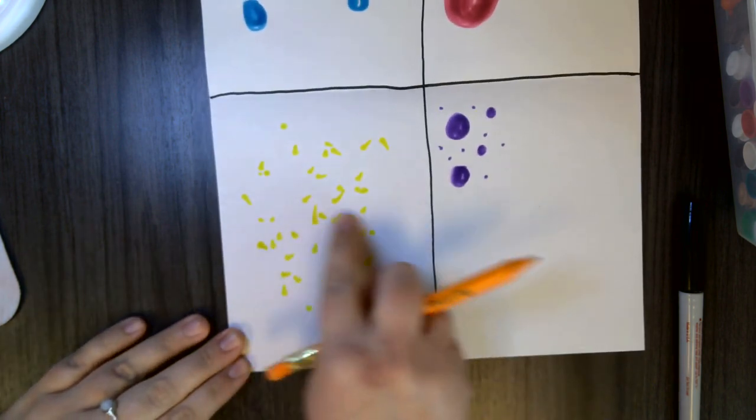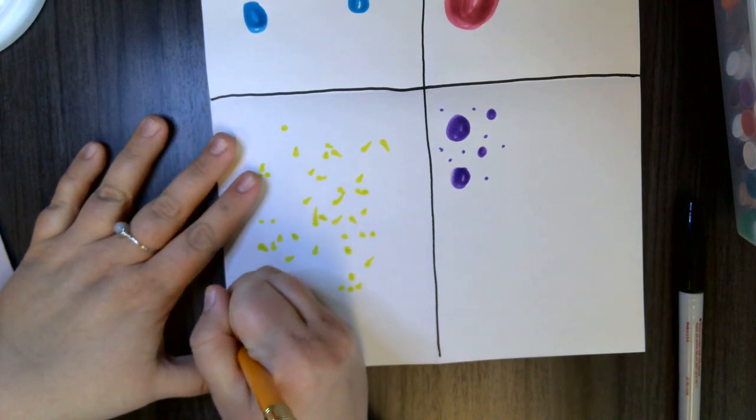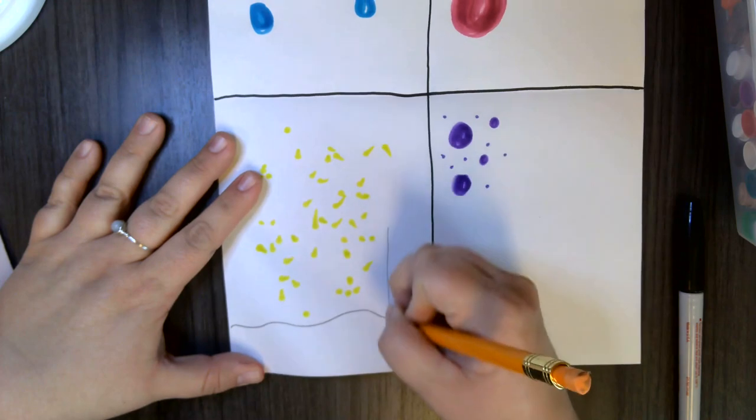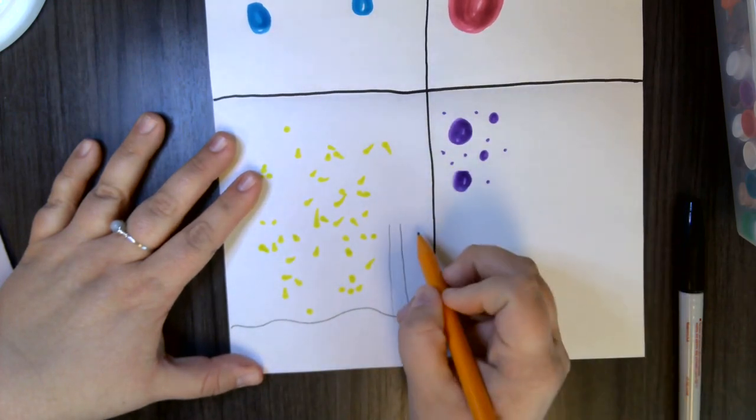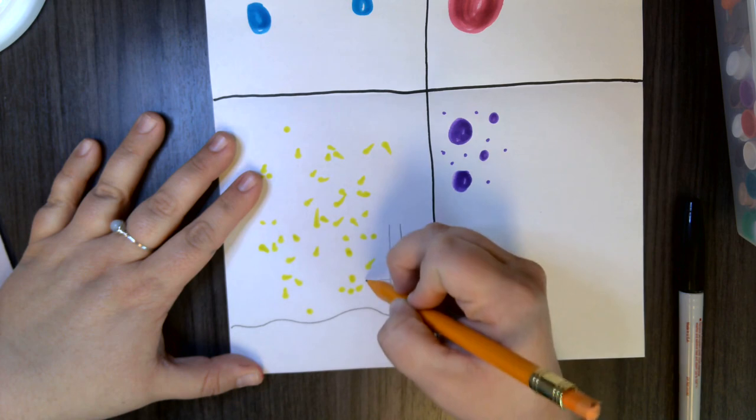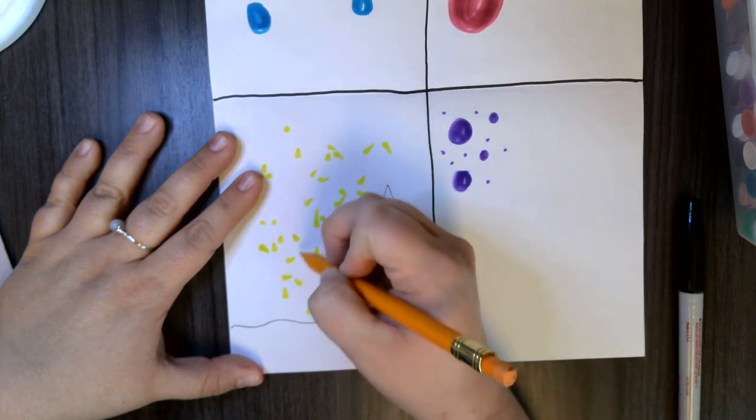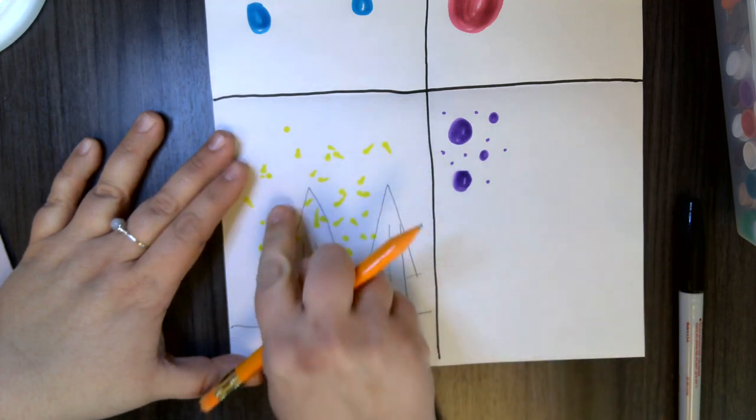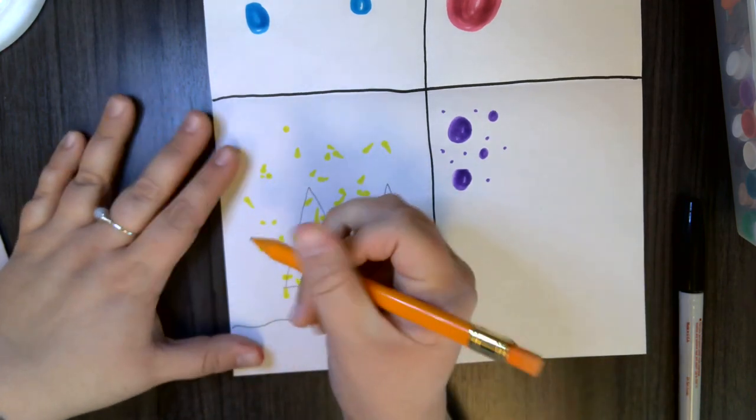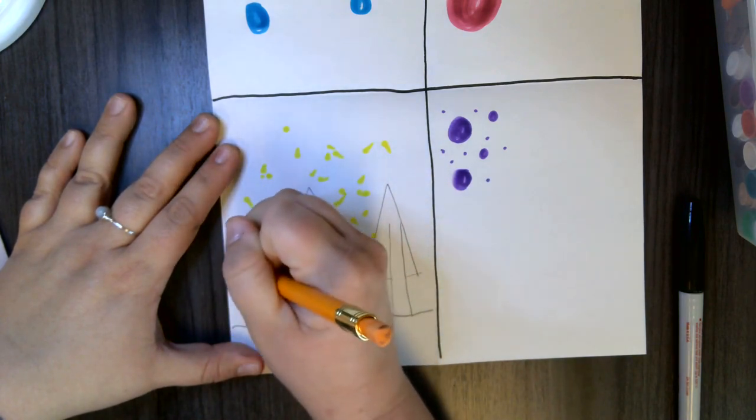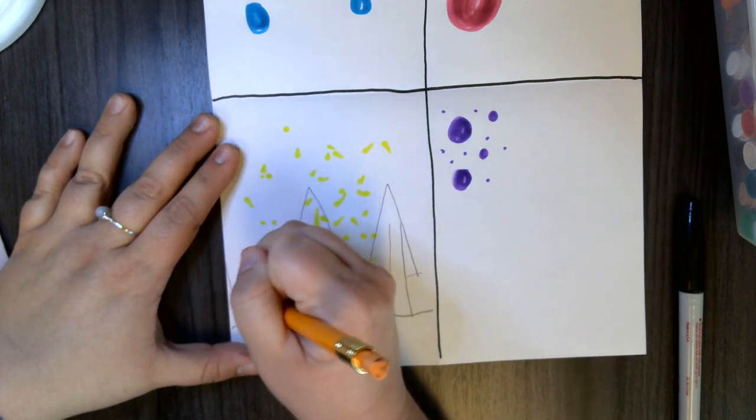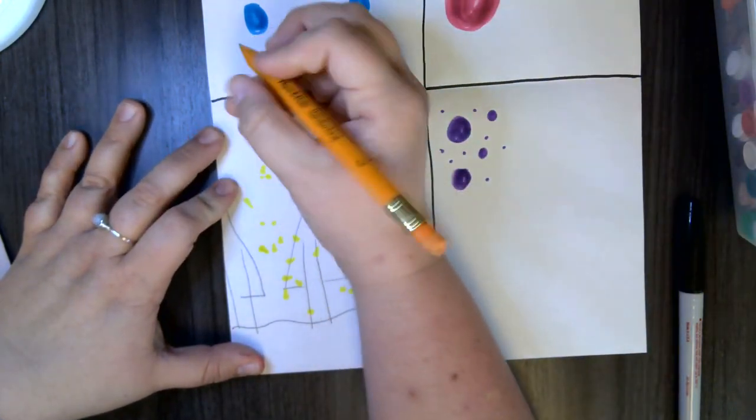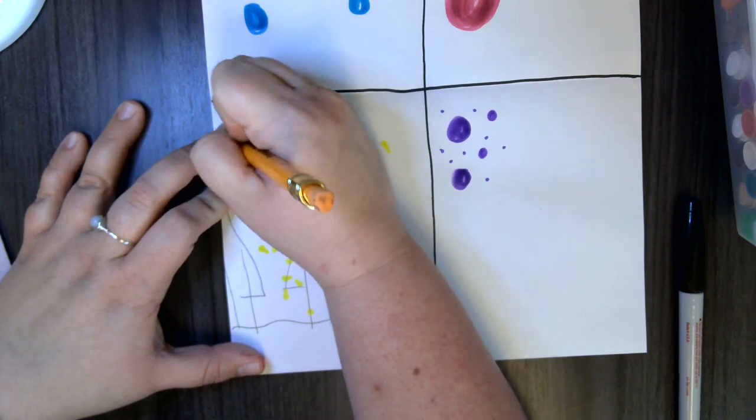You know what? These yellow dots—I'm going to draw a ground and add some trees in the background. Because to me, these yellow dots remind me of seeing fireflies outside my house. And I'm going to draw a moon right here.